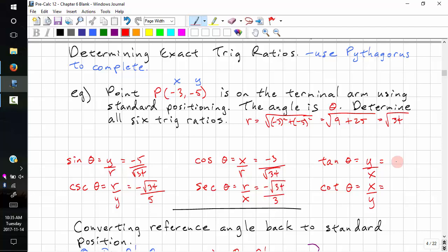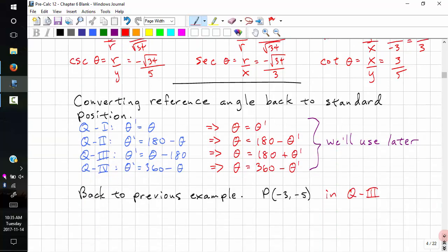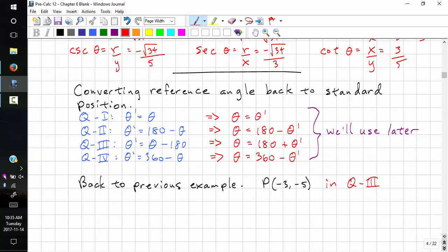We just flip this over, negative root 34 over 3. Here we have negative 5 over negative 3, and that's just 5 over 3. Two negative signs cancel out. Take the reciprocal, this is 3 over 5.